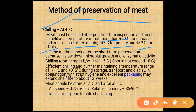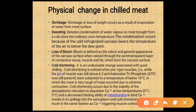Chilling is the method of choice for short-term preservation because it slows microbial growth and enzymatic activity. Chilling room temperature is between minus 1 to minus 5 degrees Celsius, not exceeding 10 degrees Celsius. Efficient chilling and maintenance at minus 1 to 0.5 degrees Celsius with strict hygiene and excellent packaging may extend shelf life to about 12 weeks. Air speed in the room is 0.75 meters per second and relative humidity is 85 to 90%. Rapid chilling leads to cold shortening.